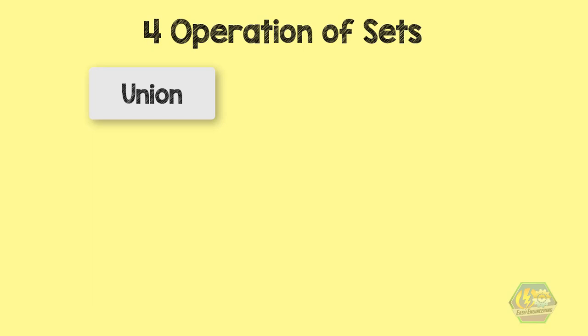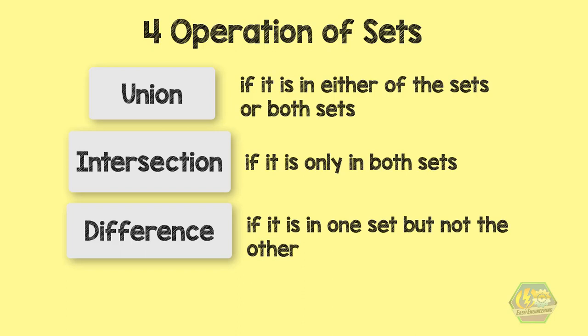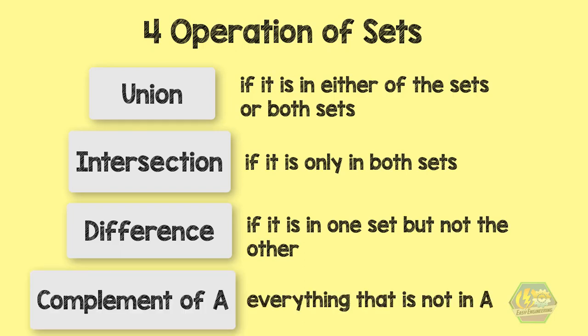To summarize it all, we have four operations on sets. Union is in either set or both sets. Intersection is only in both sets. Difference is one set but not the other. And lastly, complement of A is everything that is not in A. That would end our topic for today.